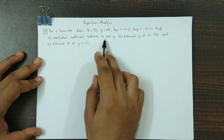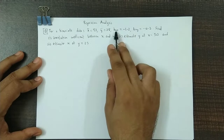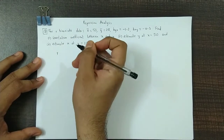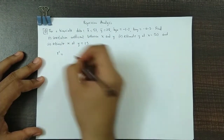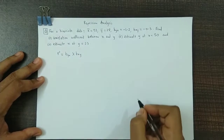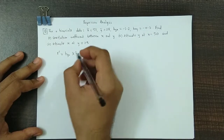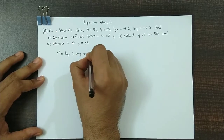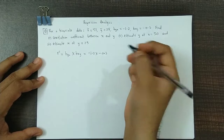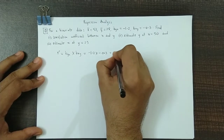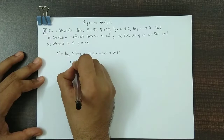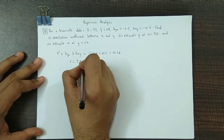In order to obtain the correlation coefficient, we can make use of the regression coefficients. We know that the correlation coefficient r can be calculated as: r² is given by byx multiplied by bxy. We have the values for byx and bxy, so we substitute them: this is minus 1.2 into minus 0.3, which equals 0.36. Now we take the square root, obtaining r as plus or minus 0.6.